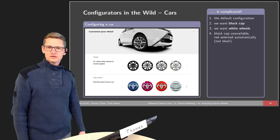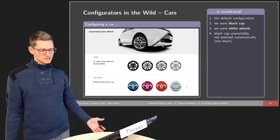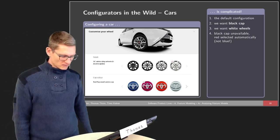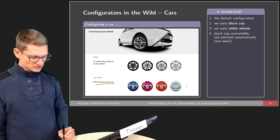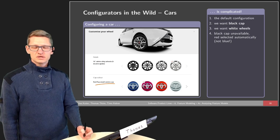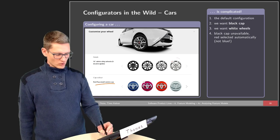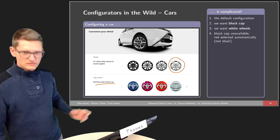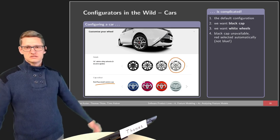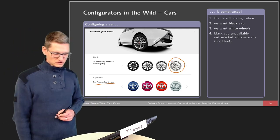Whoa, what happened now? Something changed in my configuration. Somehow the configurator automatically updated my configuration of the small center cup — it updated it from black to red, because for some reason you cannot order this white wheel together with a black cup in the middle. Maybe some designer said this doesn't look nice, and you really don't want to give this decision to customers.